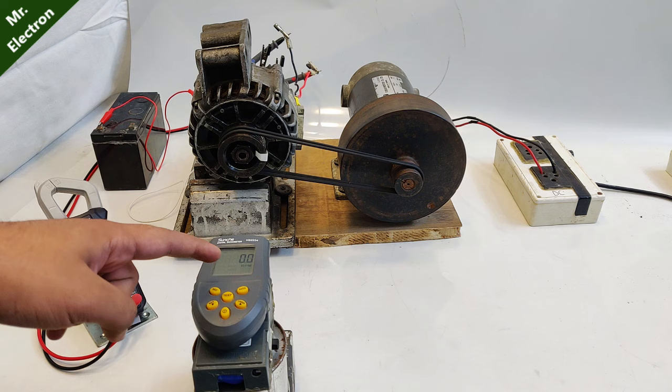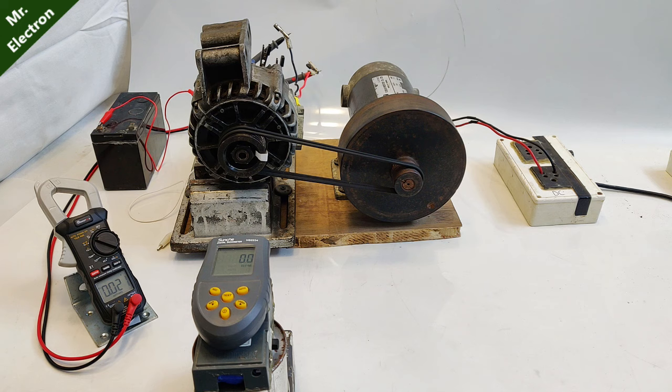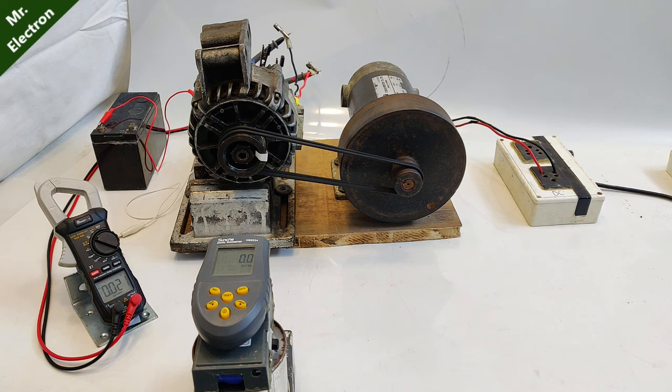So guys, you can see that the tachometer is fully set and the meter at present is pointing zero volts. So let's connect the battery terminals to the rotor winding and start the test.